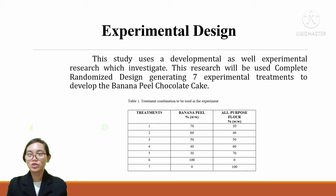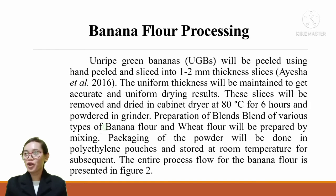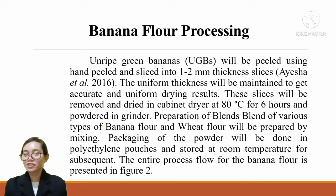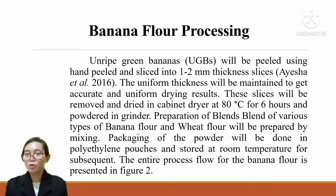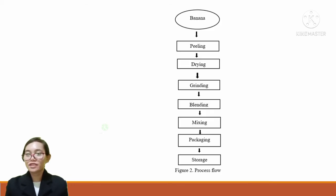Experimental Treatments to develop the Banana Peel Chocolate Cake. Table 1 shows the treatment combinations to be used in the experiment. Banana flour processing: ripe green bananas will be peeled by hand and sliced into 1-2 mm thickness slices. The uniform thickness will be maintained to get accurate and uniform drying results. These slices will be dried in a cabinet dryer at 80 degrees Celsius for 6 hours and powdered in a grinder. Blends of banana flour and wheat flour will be prepared by mixing, packaged in polyethylene pouches, and stored at room temperature. The entire process flow for banana flour is presented in Figure 2.